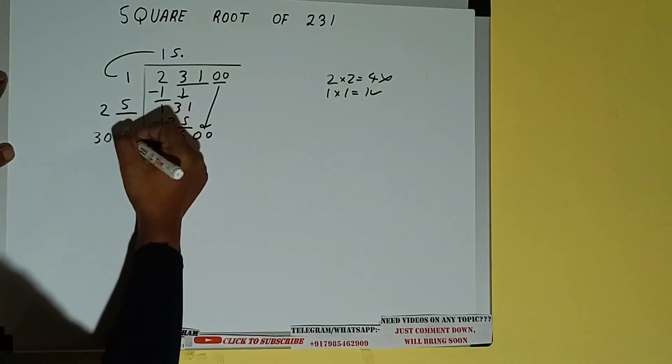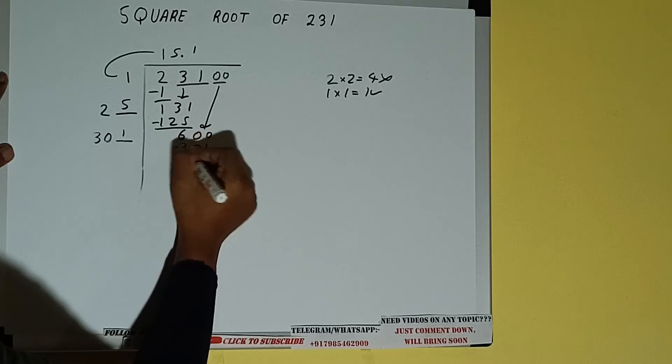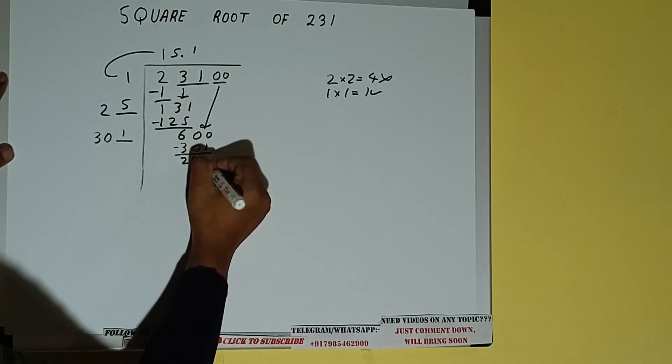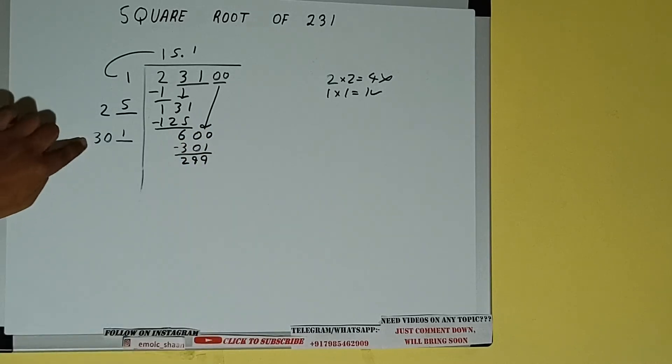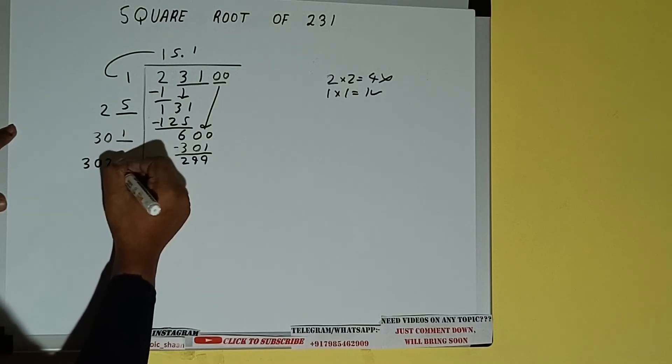Now we can write one here and one here. It will be 301. Subtract, 299 will be left. Now 301 into 1 we did, so add both. So 301 plus 1 will be 302. Write it here and keep a digit extra.